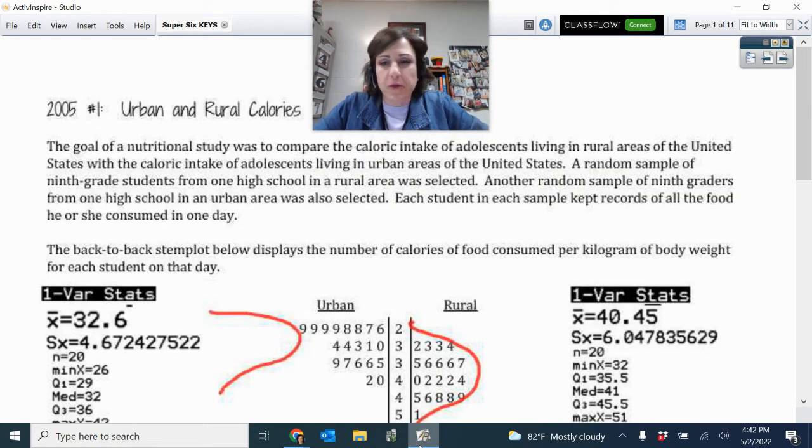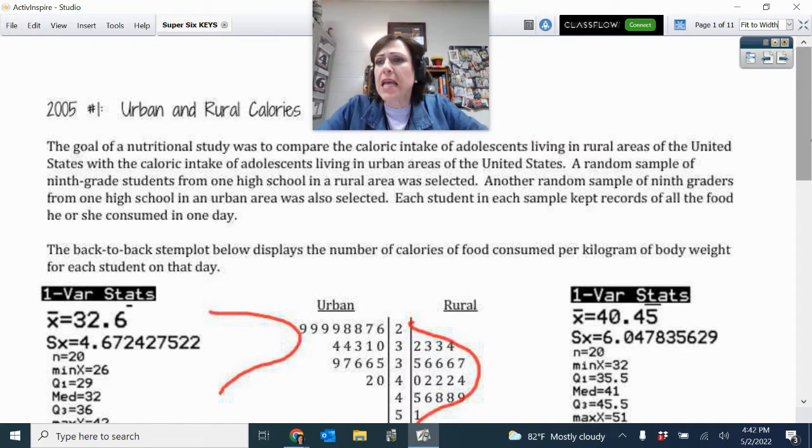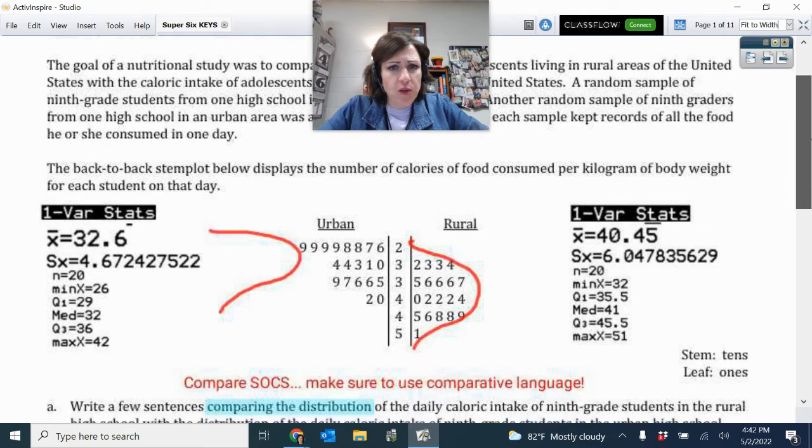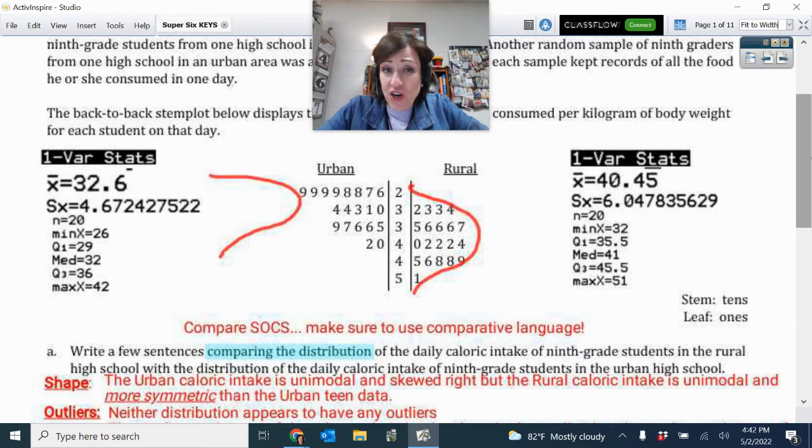Alright, let's go over your free responses, pages three and four, which is the urban and rural calories. So this one, you were asked to first compare the distribution. So comparing the distribution, that is with your SOCS, your shape, if there's outliers, center and spread.